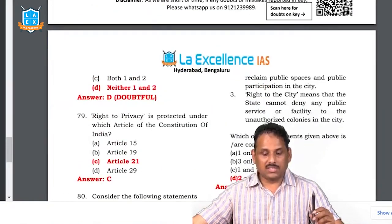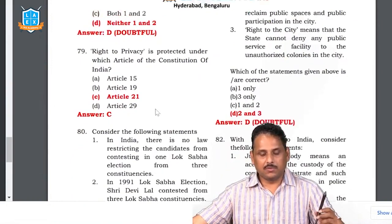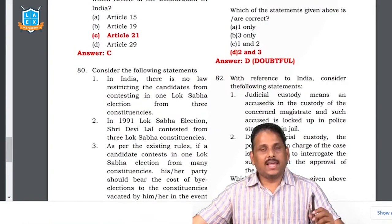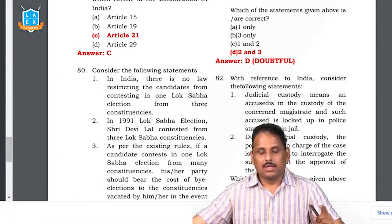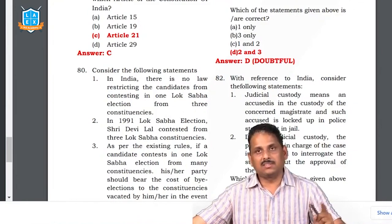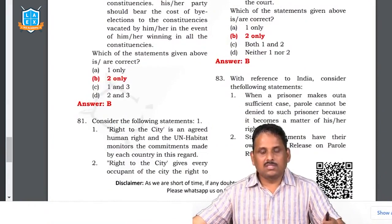Question 78: Right to Privacy — the Puttaswamy judgment, Article 21. Question 79: electoral reforms — today a candidate can contest only from two constituencies for Lok Sabha. The by-election expenditure has to be borne by the government, not by the candidate. First and third statements are wrong; the second statement is the answer.